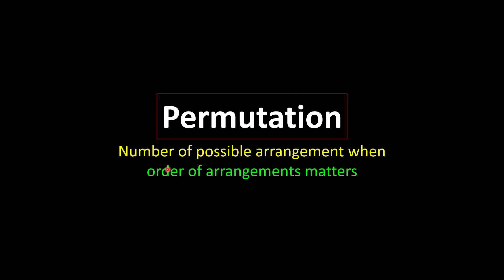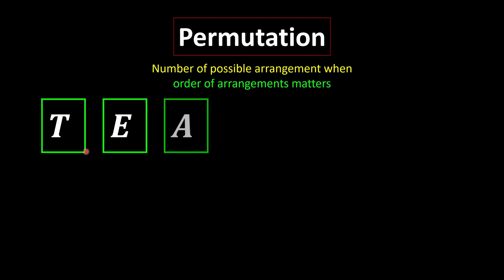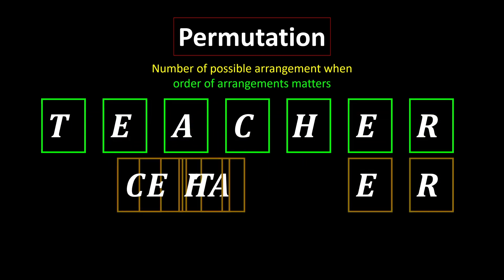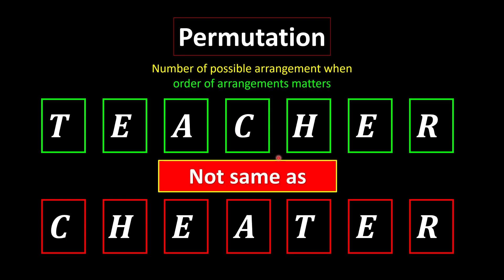Permutation helps us to find all the number of possible arrangements when the order of arrangement matters. For example, if we have the alphabet of 'teacher' — T-E-A-C-H-E-R — and we rearrange the letters, we get something like 'cheater'. Although they have the same letters, because the arrangement is different, we say that they are not the same for permutations.